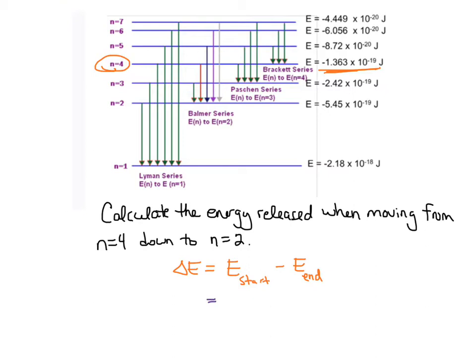So I write that number negative 1.363 times 10 to the negative 19 in that unit of joules, because energy has a unit of joules. And from that, I subtract where I end. I'm just gonna put that in parentheses so you can see. And where I end, which is n equals 2.